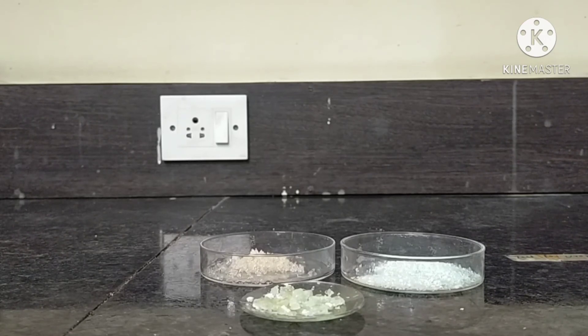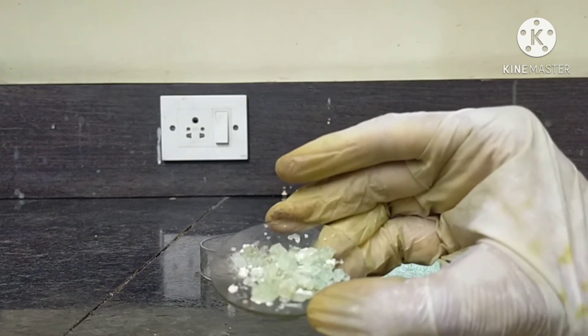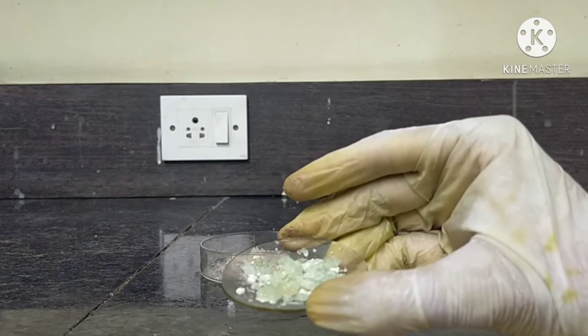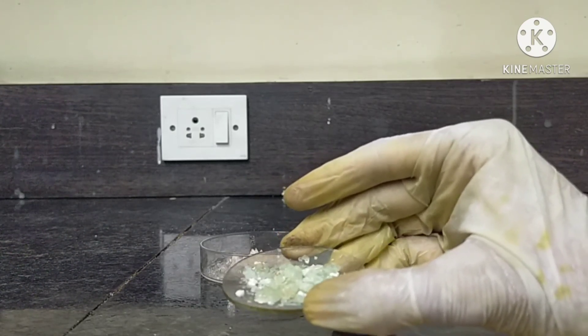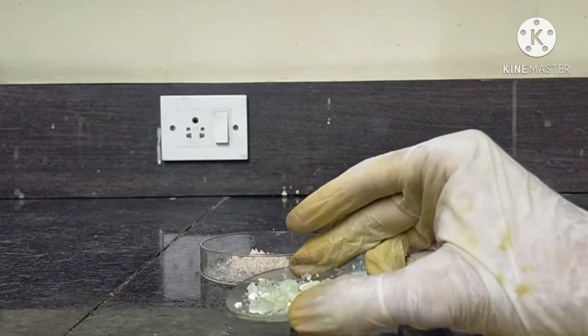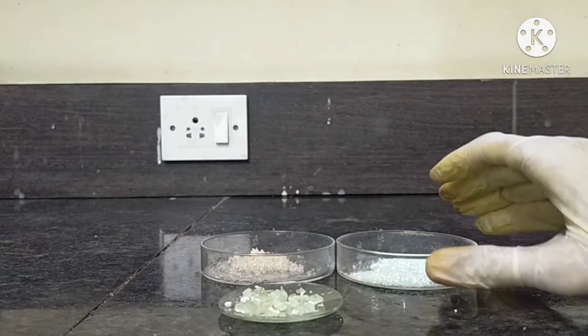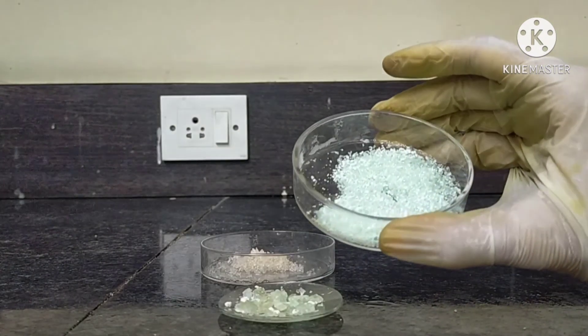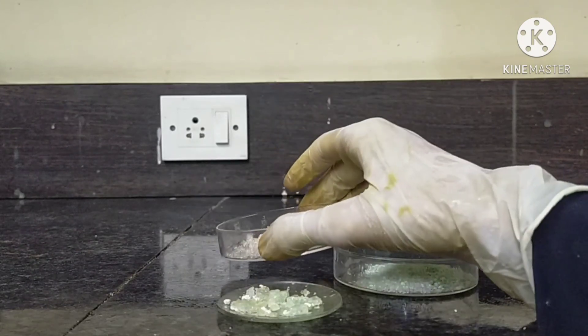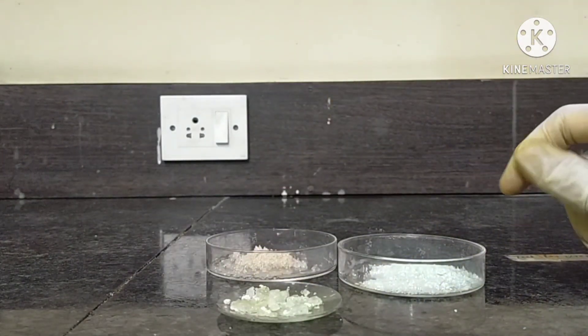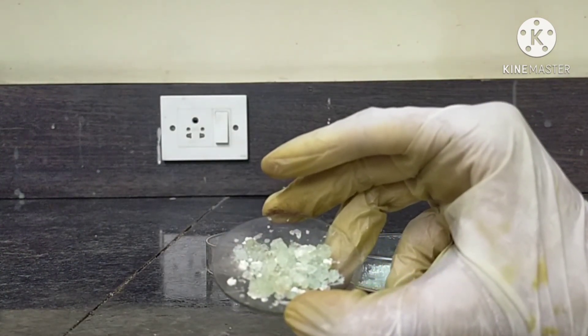So the theory behind this experiment is: First, this is ferrous ammonium sulphate or called Mohr salt. Mohr salt is one of the important laboratory reagents and is used as a reducing agent. Chemically, Mohr salt is ferrous ammonium salt or called a double salt. It is prepared by dissolving an equimolar mixture of ferrous sulphate and ammonium sulphate in acidified water. The ferrous ammonium sulphate color is faint green color solid.